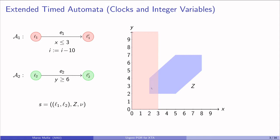If edge E1 is taken, then the clock constraint, shown here in red, will be intersected with the zone and takes us to this successor. In a similar way, if E2 is taken, then it will lead to this successor.